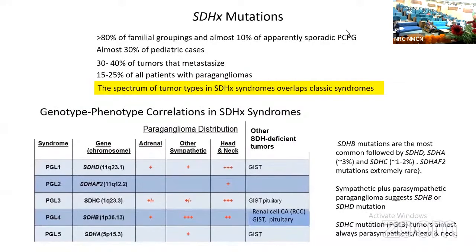SDHX mutations create an entire new level of complexity in dealing with hereditary tumors. The great majority of familial groupings of pheochromocytoma and paraganglioma, and almost 10% of apparently sporadic tumors, are accounted for by these mutations. SDH mutations also account for almost 30% of pediatric cases and at least 30% of the tumors that metastasize, and are present in somewhere between 15 and 25% of all patients with paragangliomas. Extremely importantly, the spectrum of tumor types in patients with SDHX syndromes overlaps the spectra of classic syndromes.